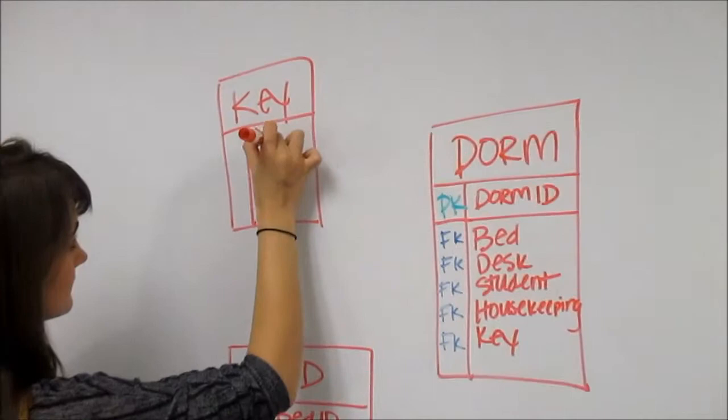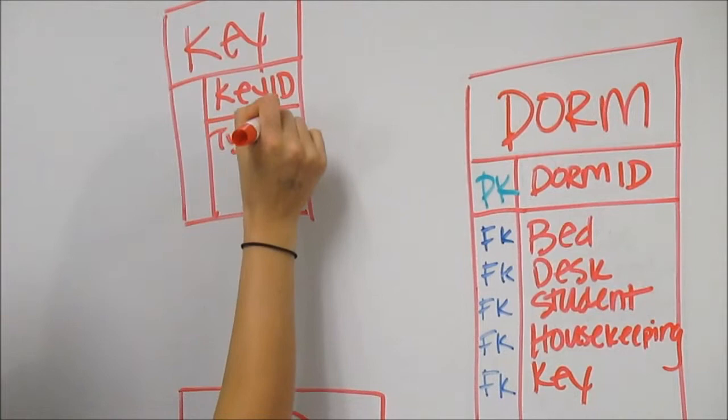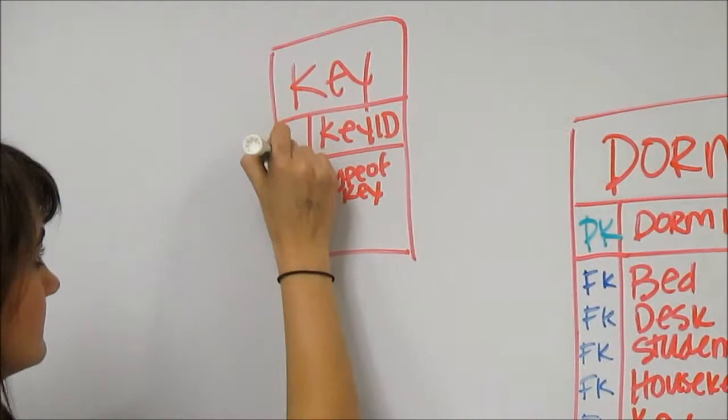We now move to our next entity, which will be key. Identify the primary key, key ID, and list the attributes below, including type of key.